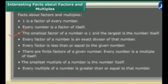Every factor of a number is an exact divisor of that number. This means that the number is completely divided and the remainder is always zero.